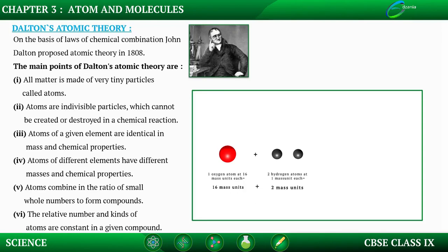We have learned about the laws of chemical combination in the previous topic. Now, we do not know how these laws of chemical combination came into existence. This scientist called Dalton came up with Dalton's atomic theory in the year 1808. There are about 6 points which Dalton gave, explaining a lot about atoms, molecules, and chemical combination.